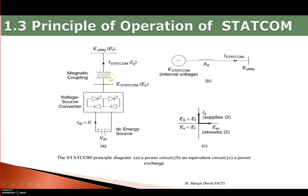When a converter is required, it will require a DC input voltage. The DC voltage is given to the converter and converted into AC voltage. This AC side is coupled across the transmission line because it is shunt compensation. The converter is coupled to the transmission system through a transformer — magnetic coupling. The terminal voltage VS is connected to the transmission line, where ET represents the transmission line voltage and ES represents the voltage source converter voltage.